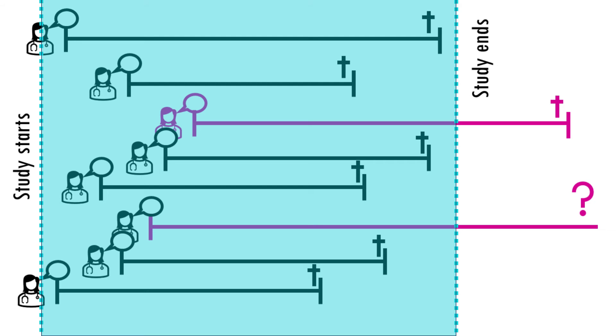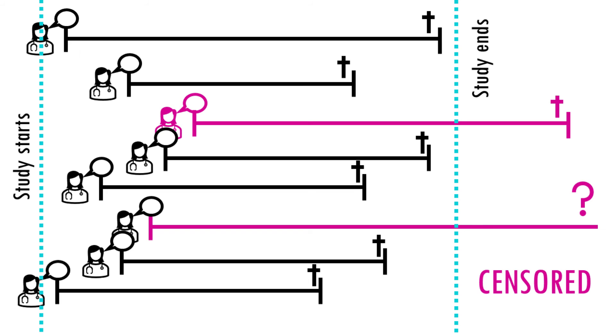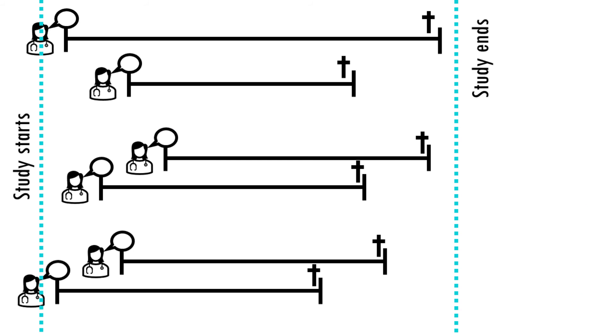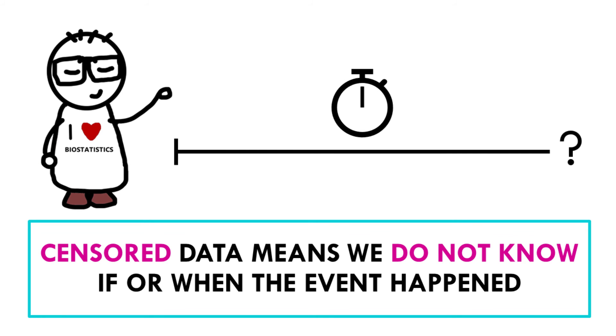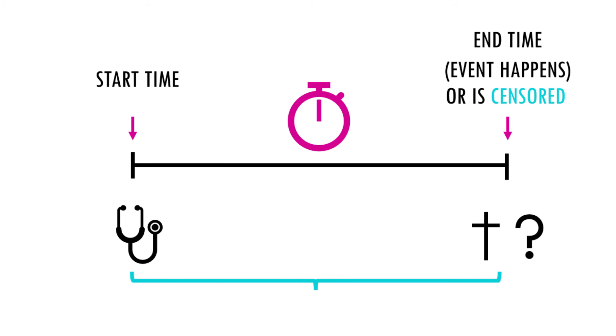For those people who got the first haircut but never came back to get a second one in that period of time, you do not know when or if the event occurred. If a certain client came for his or her second haircut a day after you decided to end the study, you cannot consider him or her for the survival analysis. That case will be censored.